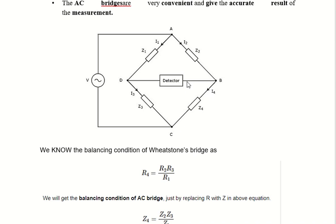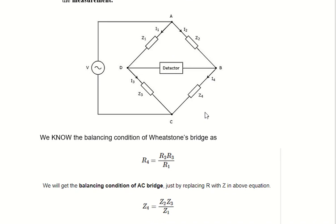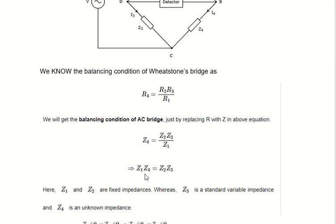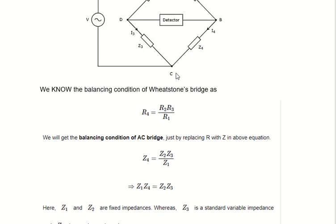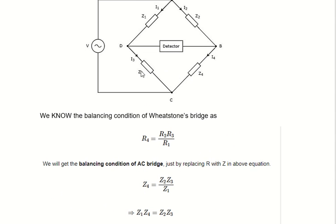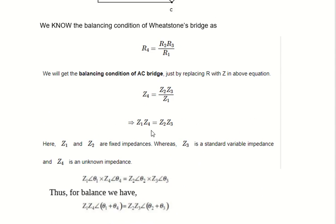Under balance, I2 equals I4 and I1 equals I3 — only then is the bridge said to be balanced. In the Wheatstone bridge the balance equation is R1·R4 = R2·R3 (multiplying opposite branches). Similarly, in the AC bridge: Z1·Z4 = Z2·Z3, and from this the unknown impedance Z4 can be calculated.